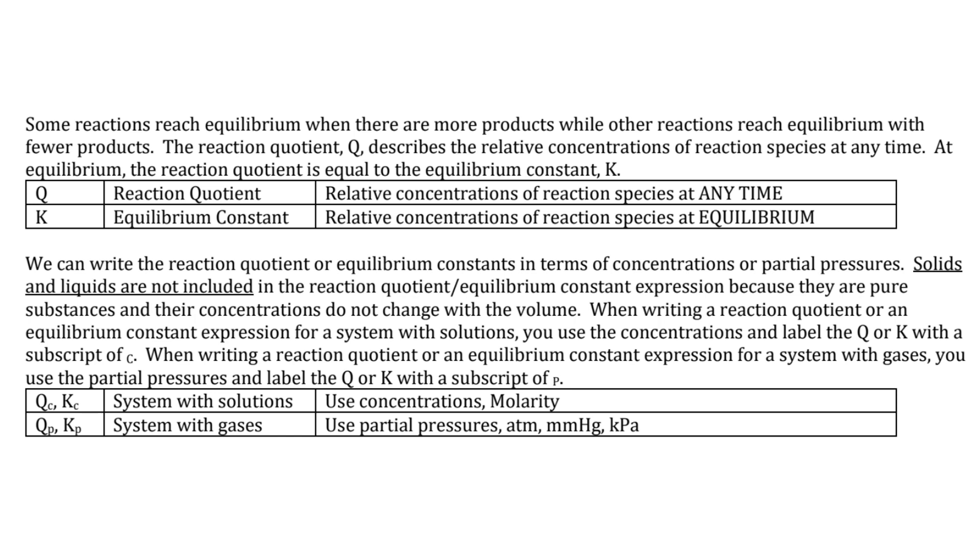Some reactions reach equilibrium when there are more products, while others reach equilibrium when there are fewer products. It just depends on the situation itself. We can rewrite the reaction quotients or equilibrium constants in terms of concentrations or partial pressures. Solids and liquids are not included.